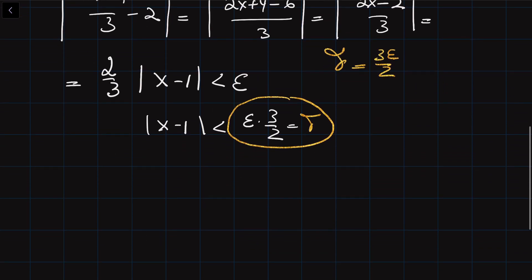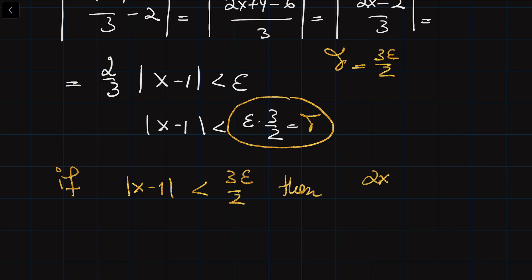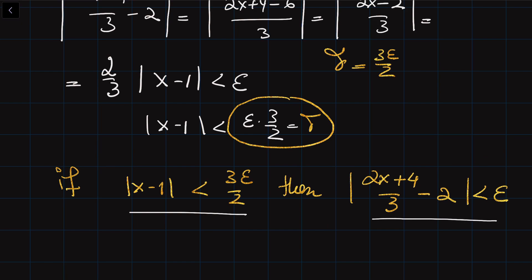We write this as: if |x-1| is smaller than 3ε/2, then |(2x+4)/3 - 2| is going to be smaller than epsilon. So by controlling the distance between x and 1, I can control the distance between the function and its limit.